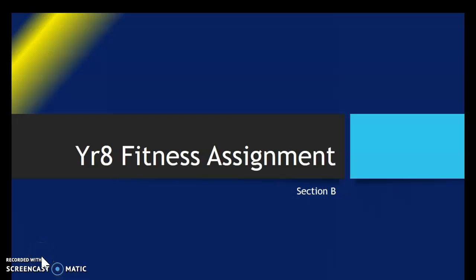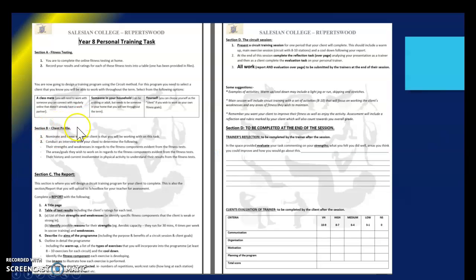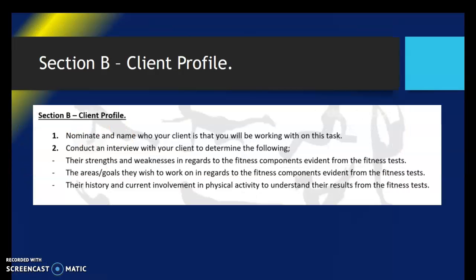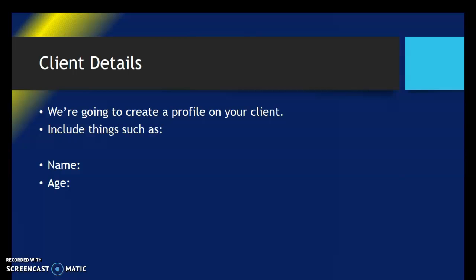Hello and welcome to video number two on the Year 8 fitness assignment. We're going to break down Section B with this video. Remember, this is what your assignment looks like and this is Section B. All you're doing for Section B is describing your client, so that if anyone else needed to do the training program, they would know who the client is and what they're aiming to do. You need to create a profile.